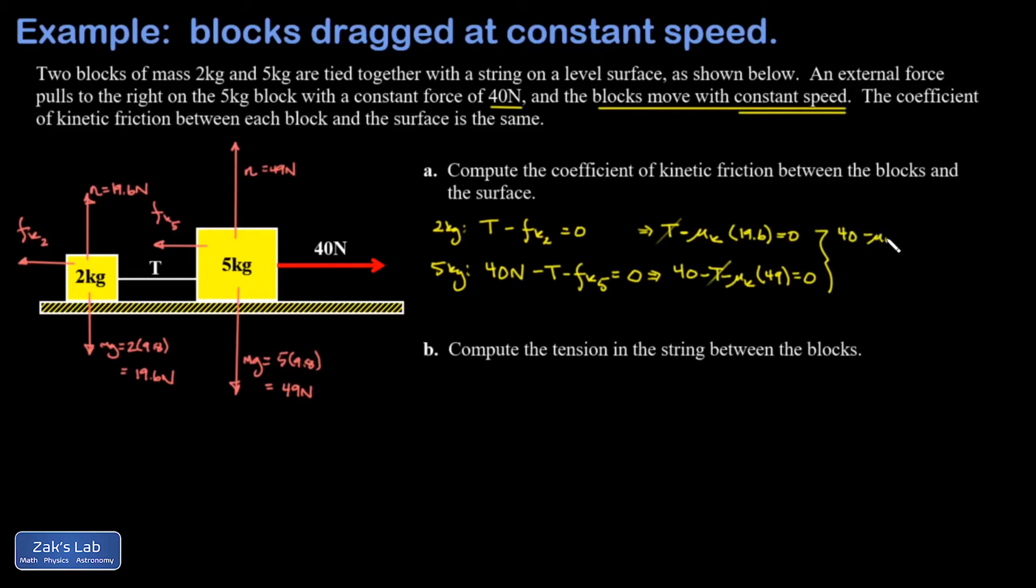I get 40 minus mu_k times 19.6 minus mu_k times 49 is equal to zero. We'll add the mu_k terms to both sides, factor the mu_k out, and I get 40 equals 68.6 mu_k. Finally I arrive at my kinetic friction coefficient: mu_k is 40 over 68.6. To three sig figs that's 0.583.